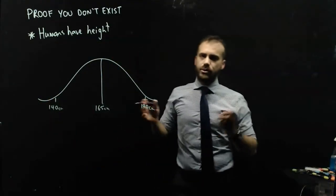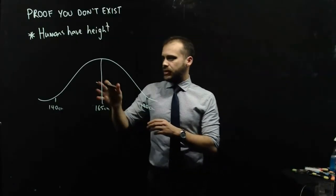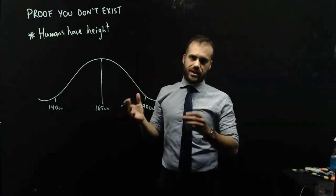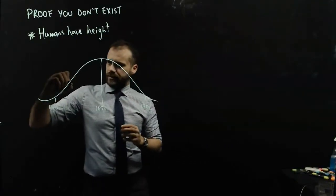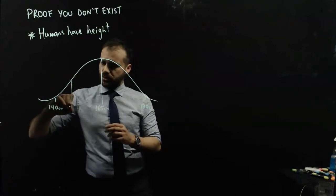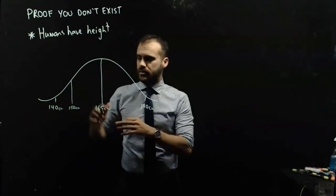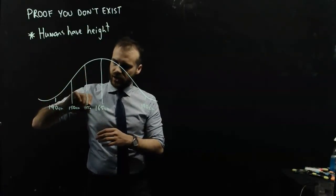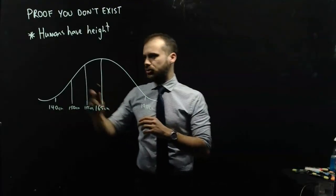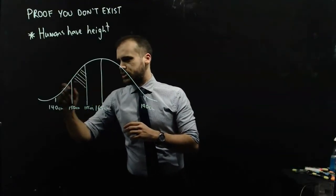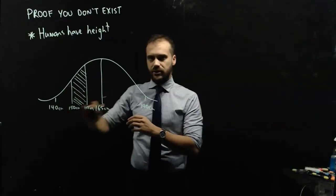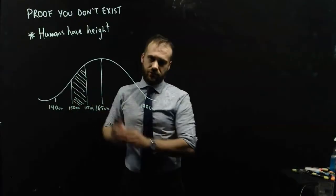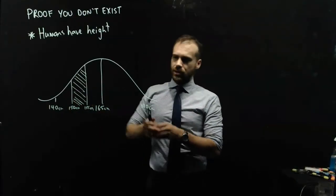Now, you know from your work on probability density functions, that the area under the curve tells you the probability that someone is a particular height. So, for instance, if I wanted to know the probability of someone being somewhere between 150 and 155cm tall, I would just shade in this area and calculate that area, and I would know the probability of them being between 150 and 155cm tall.